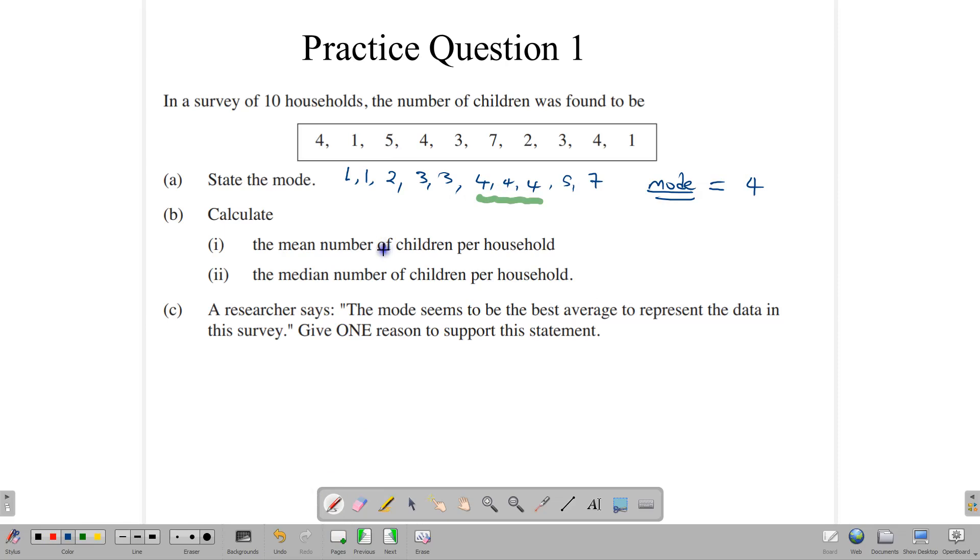The mean number of children. We want to find that too. The mean is the arithmetic average, which means that we're going to count up all the numbers, add them up, and divide by the number of numbers. So there are 10 households. So we're going to add up all these numbers. And in adding up these numbers, I'm just writing it out here. The mean is given as the sum of the numbers divided by the number of numbers. Adding up these numbers gives us 34. And there are 10 households. So we end up with 3.4.